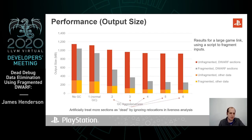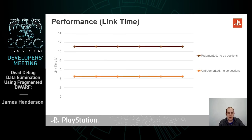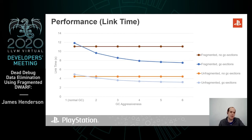Just a note: when we say GC aggressiveness, I mean that we've artificially ignored some of the relocations when doing liveness analysis, which allows us to treat more sections as dead and therefore simulate game codebases with fewer functions that are actually referenced. The link time performance tells a slightly different story — it's about 2.3 to 2.4 times slower when GC sections are not enabled, and even when we do enable GC sections, it's still a similar issue, though it improves slightly at later levels of aggressiveness.